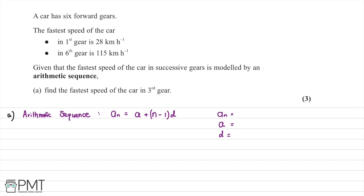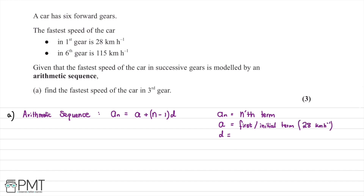What do we know about arithmetic sequences? We can work out the nth term by doing A plus (n minus 1) multiplied by D. So An is the nth term, and A is the initial or first term. In our case that's going to be 28 kilometers per hour, as we'll let n equals 1 for that case.